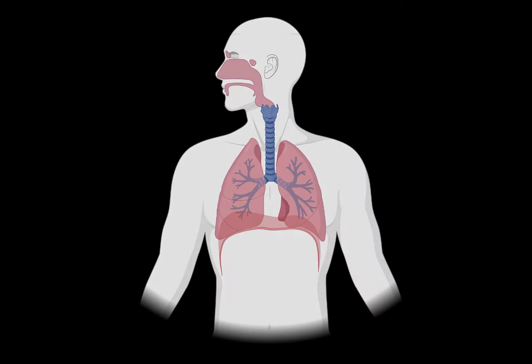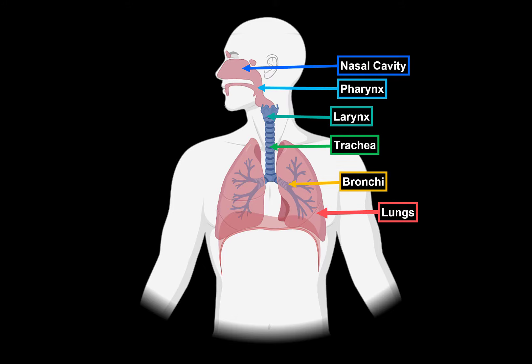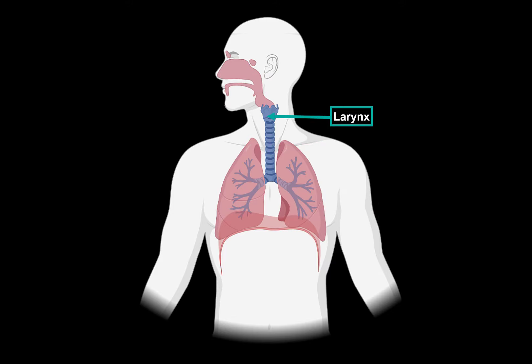The respiratory system consists of all the organs involved in breathing. These are the nasal cavity, the pharynx, the larynx, trachea, bronchi, and the lungs. In our last video, we covered the anatomy of the nasal cavity. Now let's do the anatomy of the larynx.